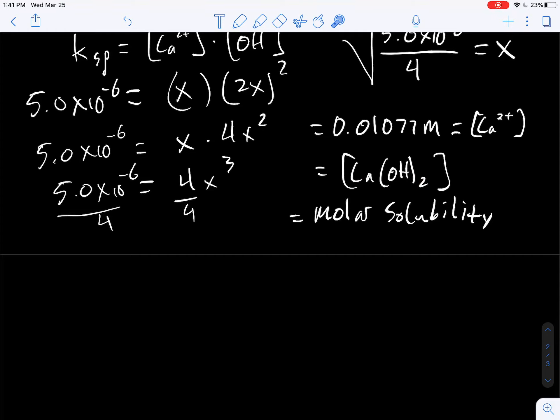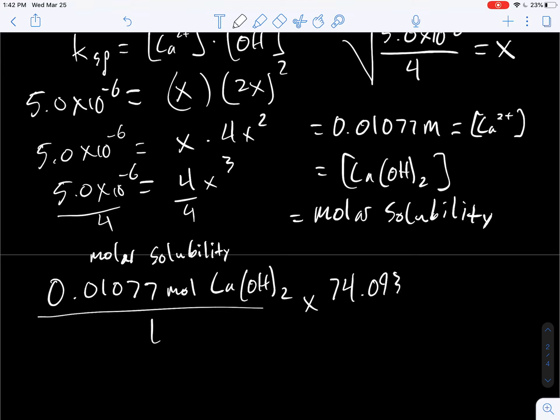How do we get to, let's say, a grams per liter value? It's pretty simple because if we think we have 0.01077 moles of Ca(OH)2, that's our molar solubility. Now I can just convert this to grams using the molar mass of calcium hydroxide. So that would be 74.093 grams of Ca(OH)2 molar mass per mole.